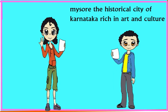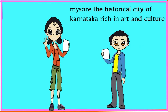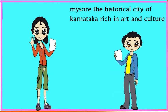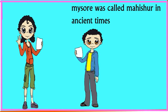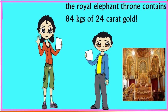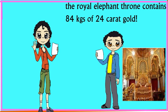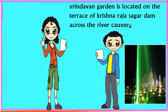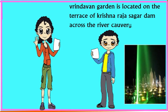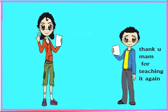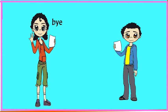Mysore, the historical city of Karnataka, is rich in culture. The Mysore Palace was the residence of the Wadiyar royal family. The royal elephant throne contains 84 kg of 24-karat gold. Vrindavan Garden is located on the terrace of the Krishna Raja Sagar Dam. Thank you ma'am for teaching it again. Bye!